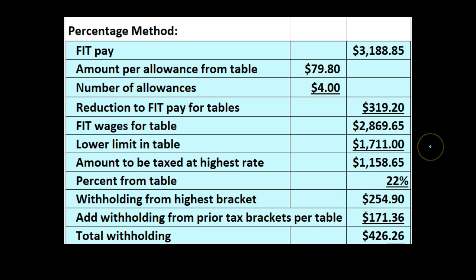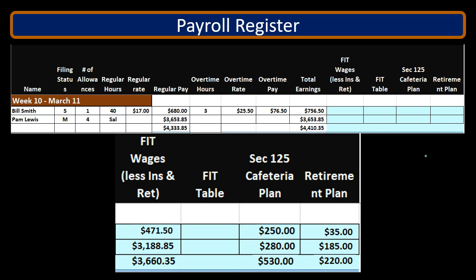This format is useful once you've done it a few times — you set up the table and fill in the appropriate amounts. Just make sure you're using the correct table for your pay period: weekly, bi-weekly, semi-monthly, or monthly. Also confirm you're on the correct side for single versus married. You can then fill in the federal income tax withholding amount accordingly. For more accounting information and courses, visit accountinginstruction.info.